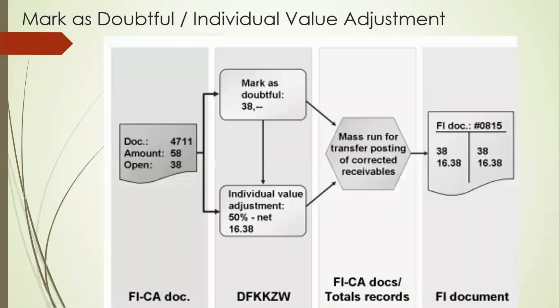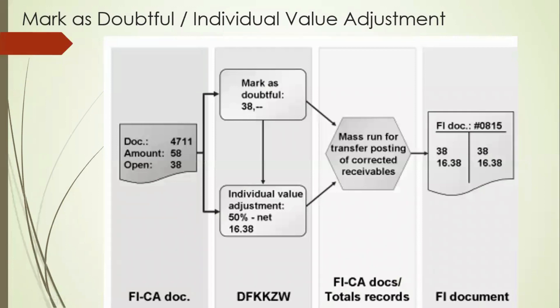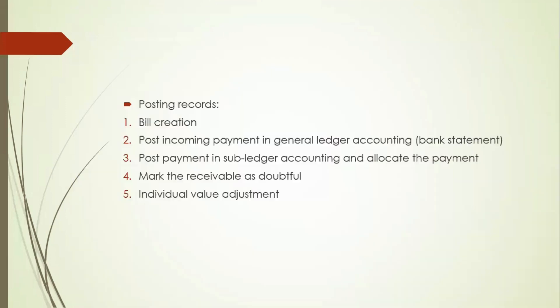We post that amount into the tables — the DFKK_ZW table will be cleared. For adjustment clearance, we need to go to SPRO and go to the adjustment clearance section and do that. It can be done manually, or sometimes we create a custom transaction to do that.